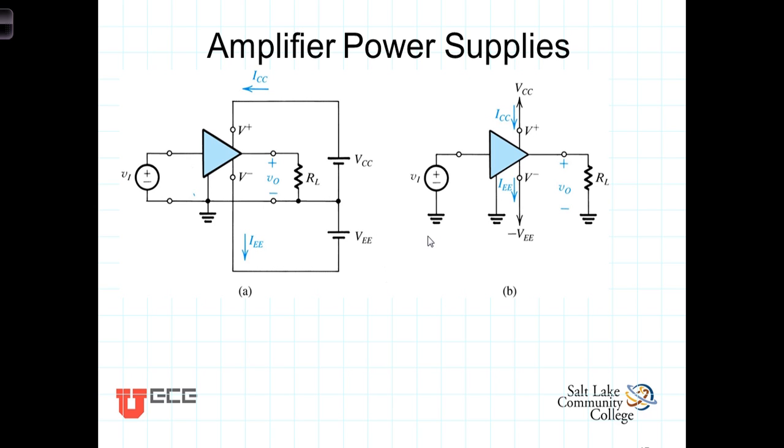So while it is true that the overall power associated with the amplifier must be conserved, we can't get more power out than we put in, what we're going to see is that the amplifier is capable of increasing the signal power at the load. And this increase in power in the signal comes from the DC sources that are connected to the amplifier.